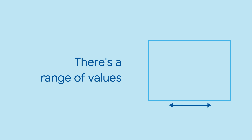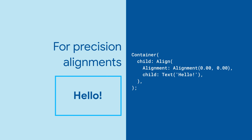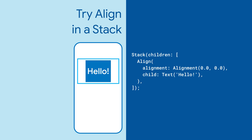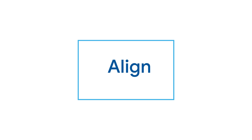You can also specify the alignment values, where negative 1 to 1 are the ranges for both left to right and top to bottom. This lets you precisely layout your child widget within its parent. You can also use Align to position widgets in a stack.